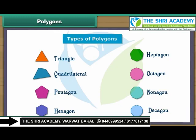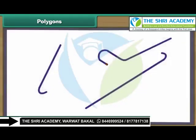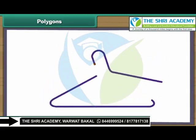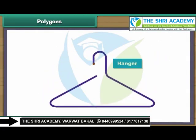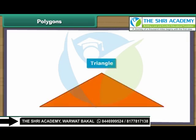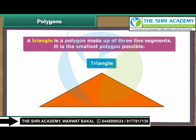Now we will learn more about each polygon one by one in detail. We take three pieces of plastic and join them to form a towel hanger. We have created a triangle. A triangle is a polygon made up of three line segments. It is the smallest polygon possible.